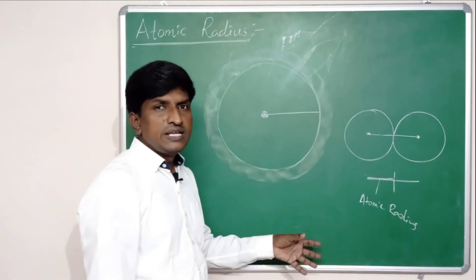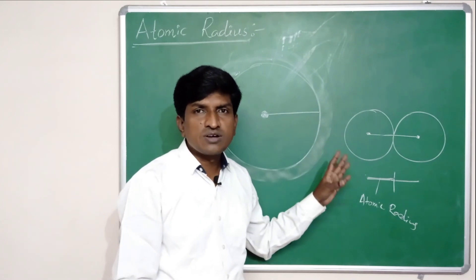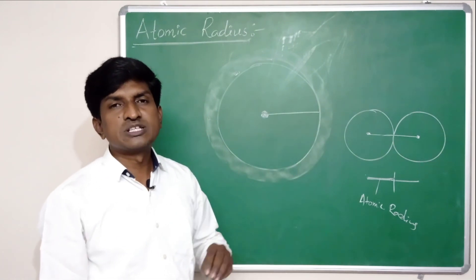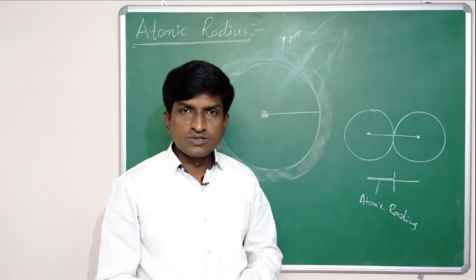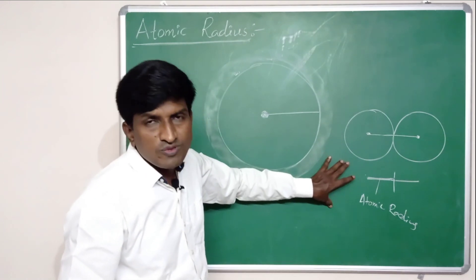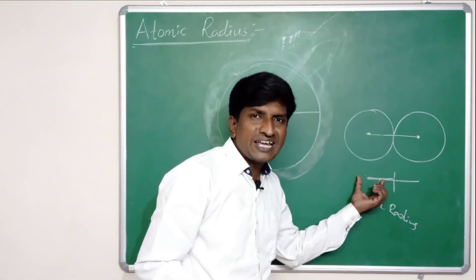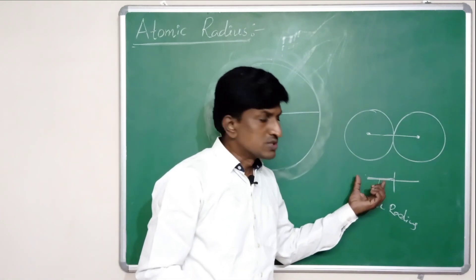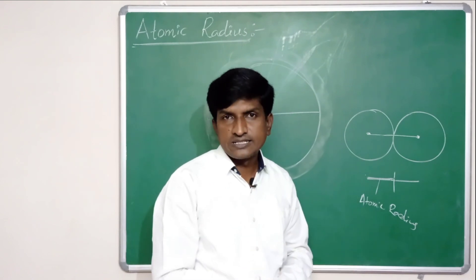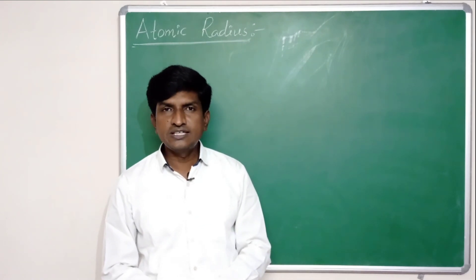In this way we measure the atomic radius of solids. Since 75 percent of the elements are metals, this method is generally used for measuring the atomic radius of metallic elements. This atomic radius is also known as metallic radius. Another way of measuring atomic radius is by measuring the distance between two nuclei of atoms combined in covalent compounds.